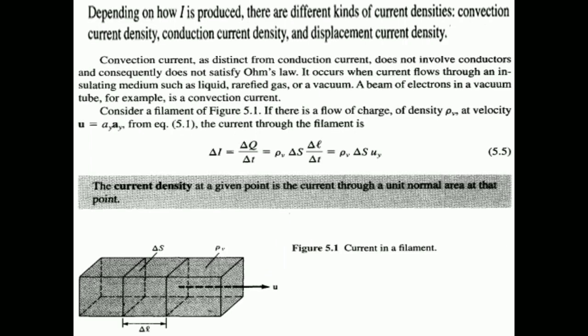Based on how current is produced, we can differentiate three kinds of current densities: convection current, conduction current, and displacement current. Here we are going to see about only convection current and conduction current. Convection current will not take place in a conductor — it takes place only in a dielectric medium such as liquid, gas, or vacuum. It also does not satisfy Ohm's law.